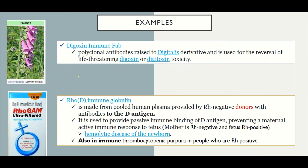Let's look at some examples of polyclonal antibodies. One of them is digoxin immune fab. Digoxin is a medication used to treat cardiac problems, and sometimes we can have digoxin or digitoxin toxicity. Digoxin is derived from a digitalis plant — the foxgloves — and sometimes we could have poisoning through consumption of this plant by animals and human beings. So we raise polyclonal antibodies against this digitalis derivative so that in situations of digitoxin toxicity, we can administer these polyclonal antibodies. They bind to the digoxin and we are able to reverse the poisoning or toxicity.